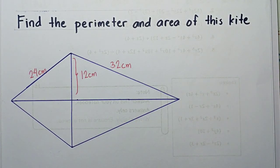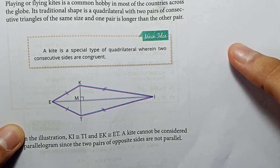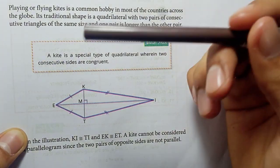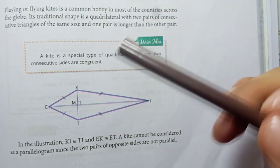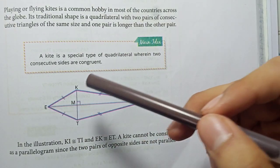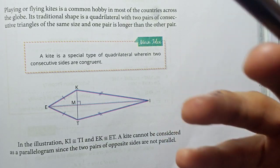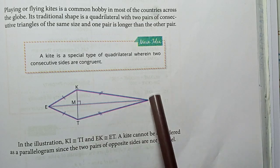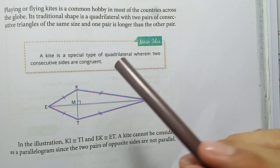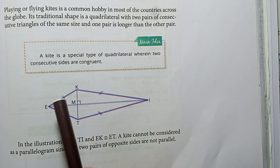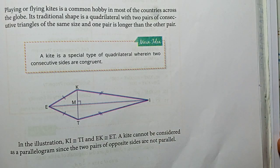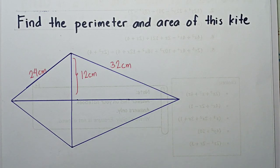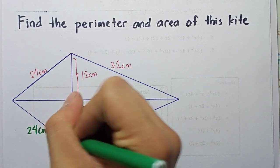A kite is a special type of quadrilateral wherein two consecutive sides are congruent. So whatever the measure of one side is, its consecutive side has the same measure. Of course, not all consecutive sides are congruent — looking at the picture it's obvious that the short and long sides are different. So the consecutive side of 24 is also 24 centimeters.